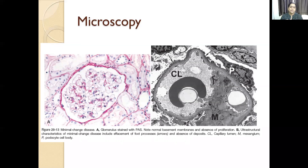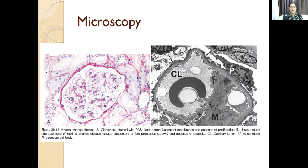In membranous nephropathy, we will see C3 and IgG deposits in the form of granular deposits. Just see the contrast. In membranous nephropathy: what is the antigen? Phospholipase A2 receptor. You should be reading it like that.